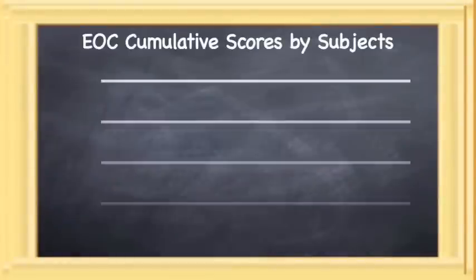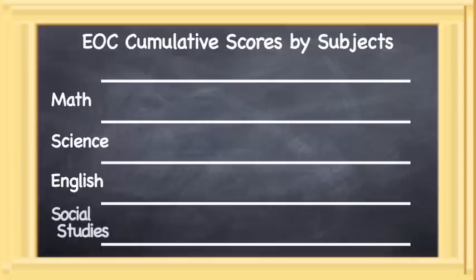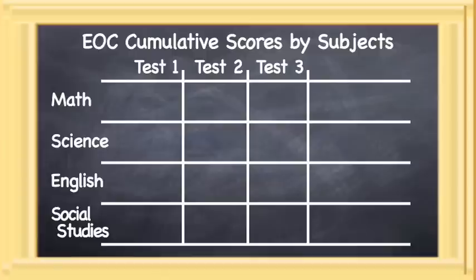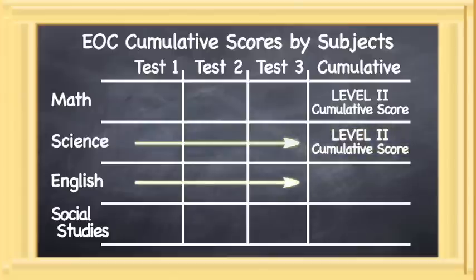Students will also earn a cumulative score for each foundation subject area: math, science, English, and social studies. The individual EOC exams in each subject area will be added together to determine a student's cumulative score. In order to graduate, a student must have a Level 2 or Satisfactory Cumulative Score in each subject area.